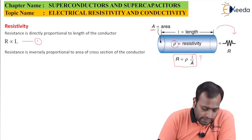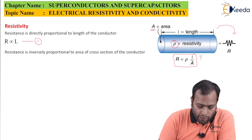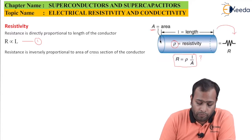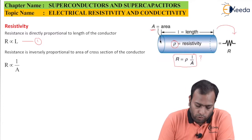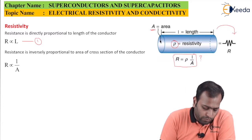Secondly, resistance is inversely proportional to the area of cross section of the conductor. Wider is the area of cross section, it will be easier for my current to flow. So I can say resistance is inversely proportional to area. This makes my second equation.